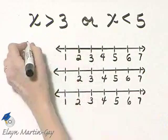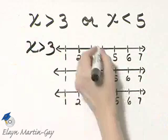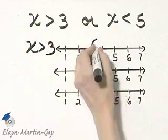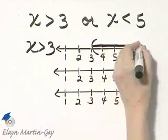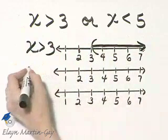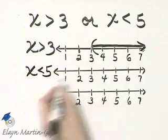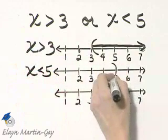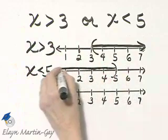So on the first number line, we'll shade all numbers greater than 3. So that will be a parenthesis at 3 and we'll shade to the right because we're shading all numbers greater than 3. On the second number line, we'll shade all numbers less than 5. So I'll draw a parenthesis at 5 and I'm shading all numbers less than 5.